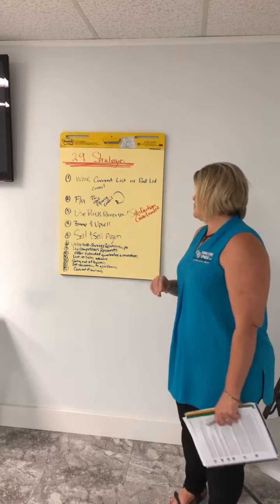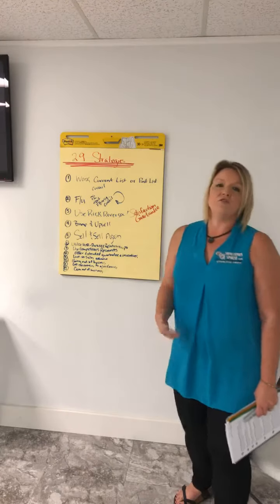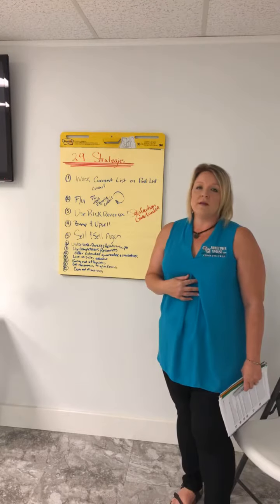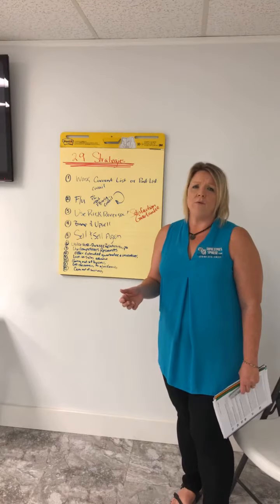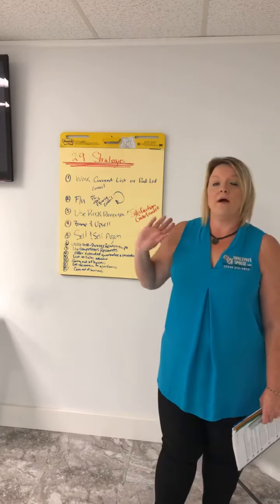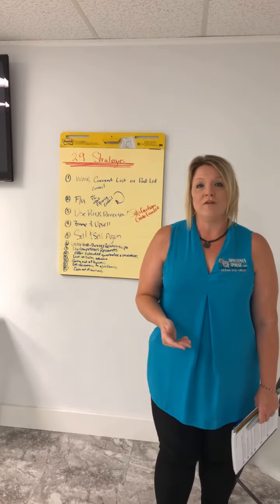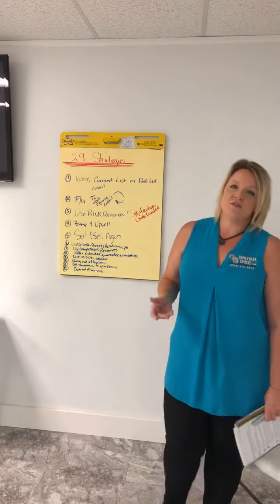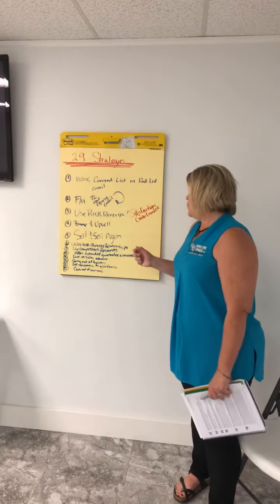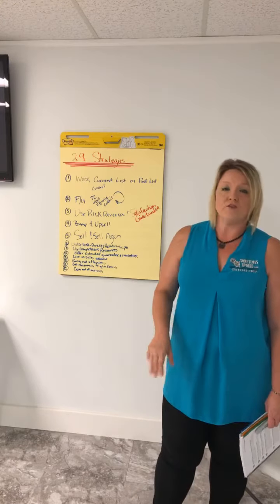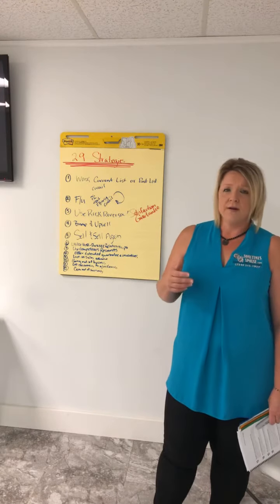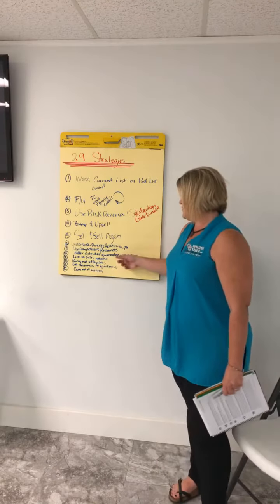So you can definitely use your competitors' resources. Number eight is utilizing extended warranties, guarantees, and incentives. What we do at Sometimes Spouse with our cleaning department is we give a 24-hour guarantee. If they find the girls missed a ceiling fan, we'll come out and take care of it as long as they contact us within 24 hours. We also give incentives through the Sometimes Home plan — a 20% discount for additional services at their home. They get sales twice a year and preferred scheduling. So we have incentives built into our business.